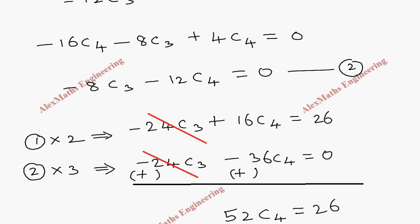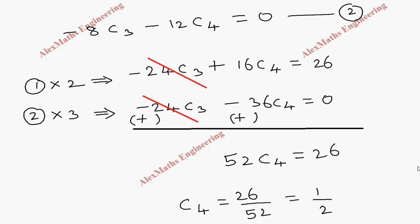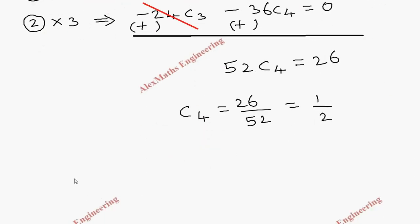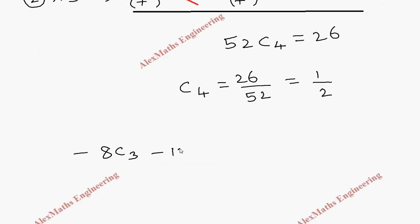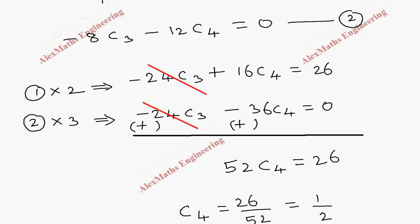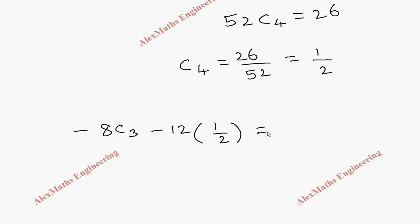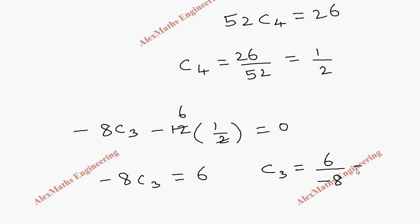Now substitute c4 = 1/2 into the second equation: −8c3 − 12·(1/2) = 0, so −8c3 − 6 = 0. Taking −6 to the other side: c3 = 6 / (−8) = −3/4. We have now found both c3 and c4.